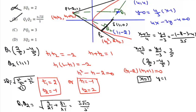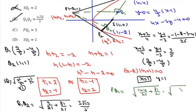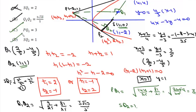Now we compute PQ1. PQ1 equals the square root of (2/5 plus 2) squared plus (minus 4/5 minus 1) squared, which is (12/5) squared plus (minus 9/5) squared, giving 144/25 plus 81/25 equals 225/25 equals 9, so PQ1 equals 3. Option C is correct. For SQ2, S is (1, 0) and Q2 is (1, 1), so SQ2 equals 1. Option D is correct. The correct options are B, C, and D.